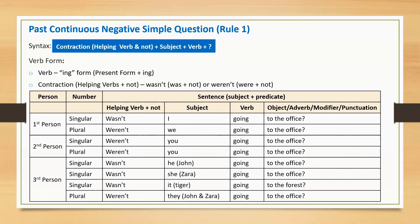Third person singular: Wasn't he going to the office? Instead of pronoun 'he', we can mention the name of the person — Wasn't John going to the office? Wasn't she going to the office? Or using her name — Wasn't Zara going to the office? Wasn't it going to the forest? If we are referring to an animal, let's say tiger — Wasn't tiger going to the forest?